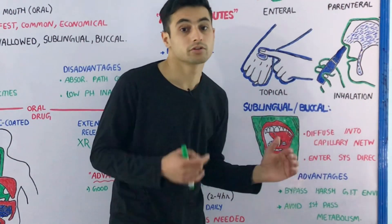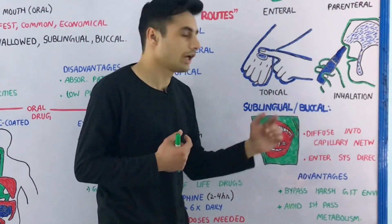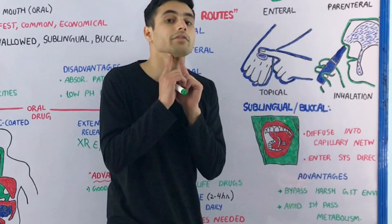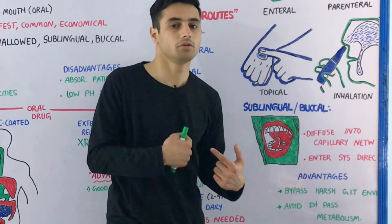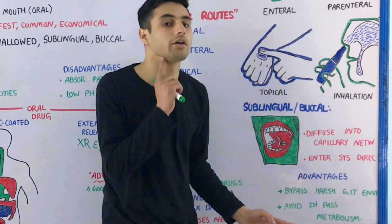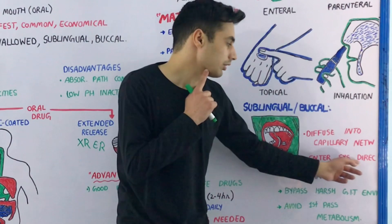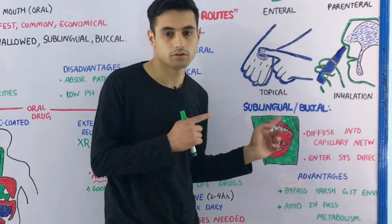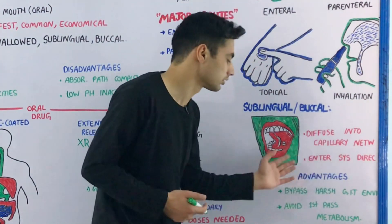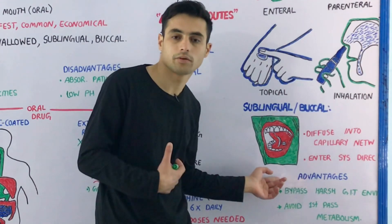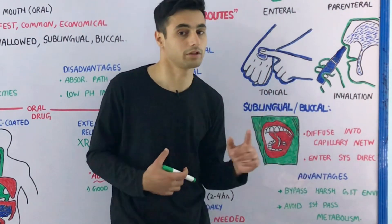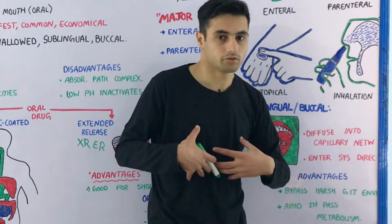Now let's talk about sublingual and buccal medication. Sublingual means under your tongue, and buccal means the space between your cheeks and the gum. The sublingual region has a lot of blood supply directly connected with your heart, so when you take medication sublingually, it diffuses into the capillary network under your tongue and enters systemic circulation directly. Because of this, sublingual and buccal routes have an immediate effect comparable to intravenous injections. They also avoid the harsh environment of the gastrointestinal tract, and first-pass metabolism — which occurs in the liver and intestines — does not occur.